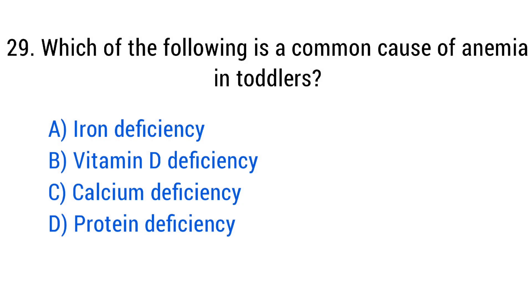Question number 29. Which of the following is a common cause of anemia in toddlers? The right answer is option A: Iron deficiency.